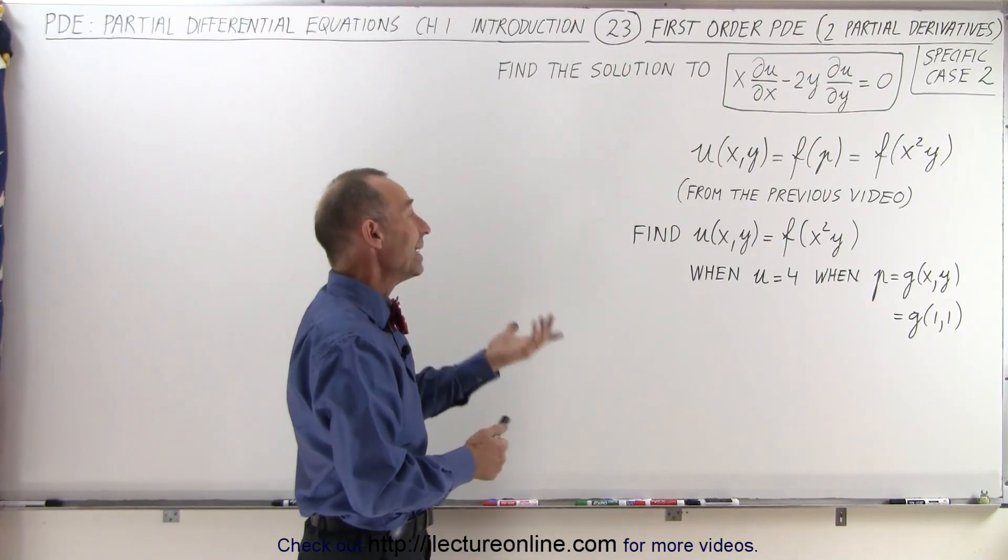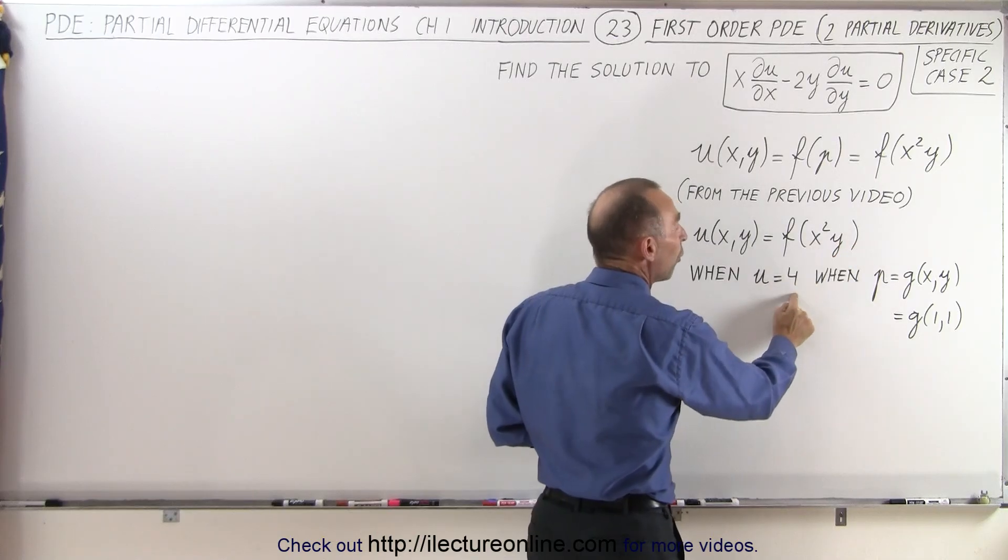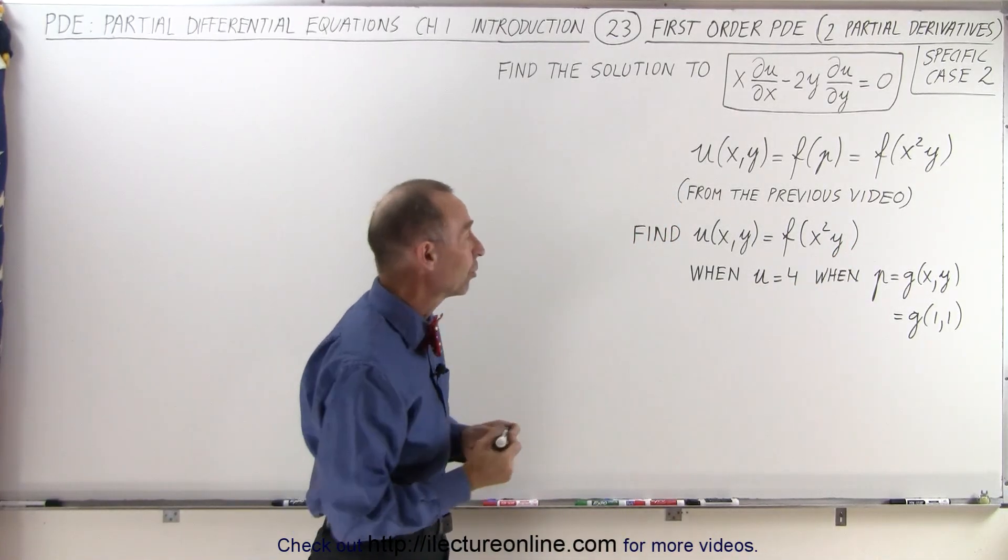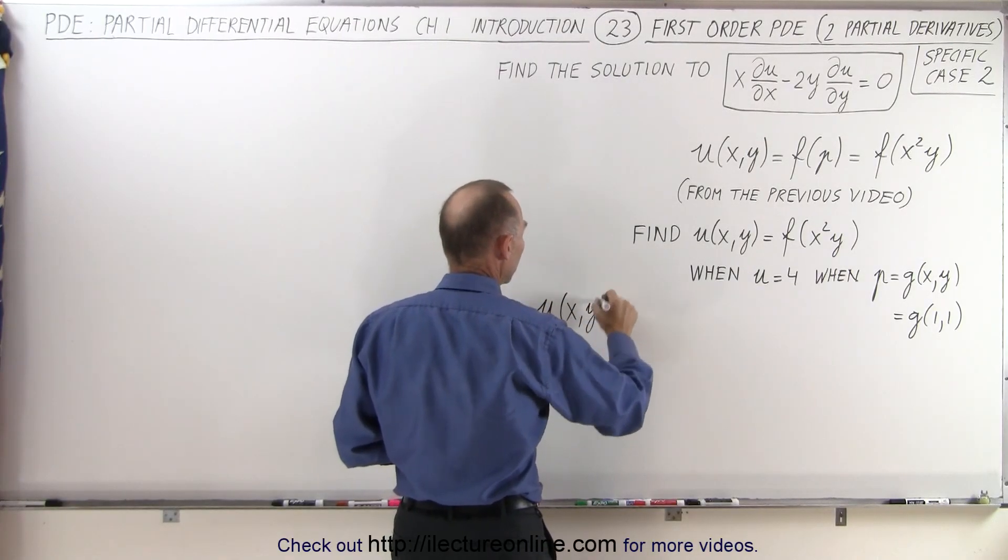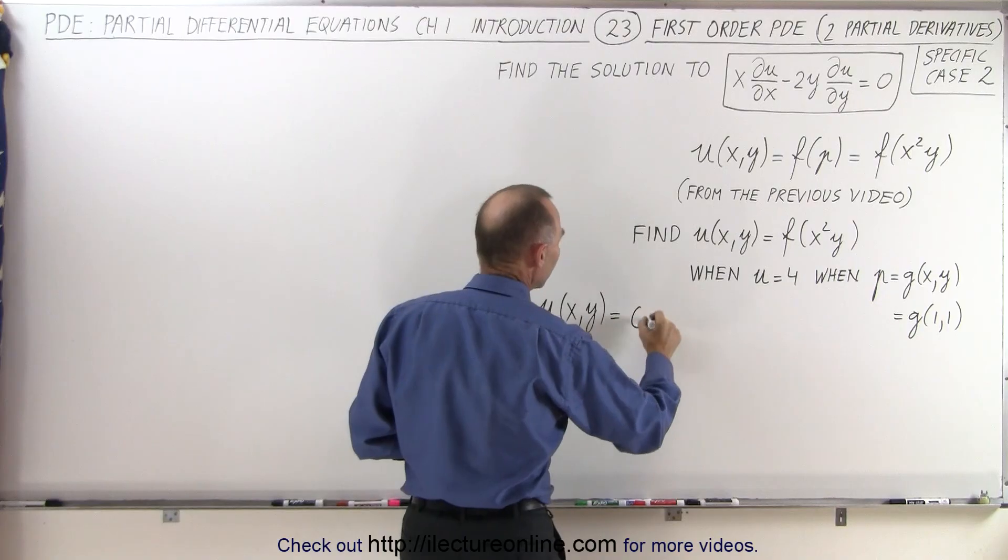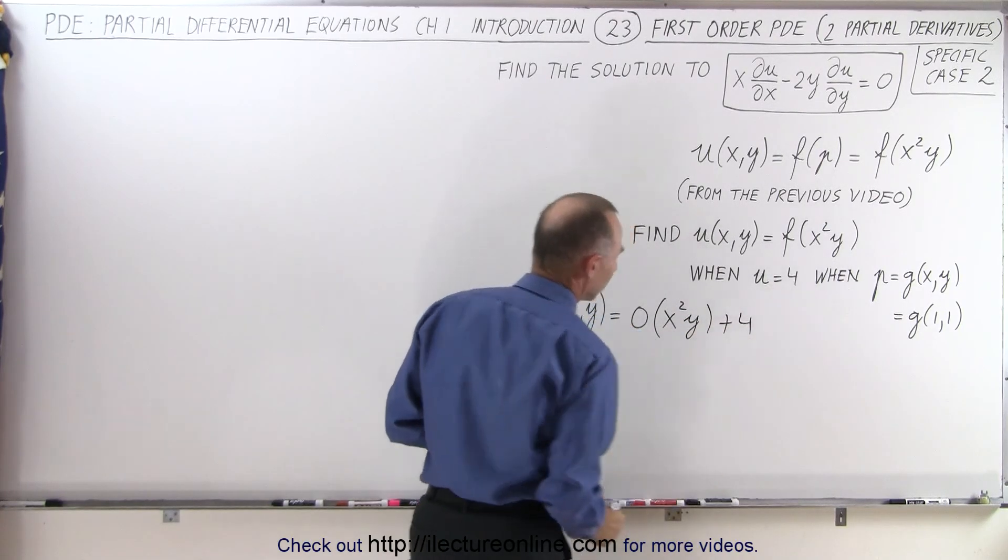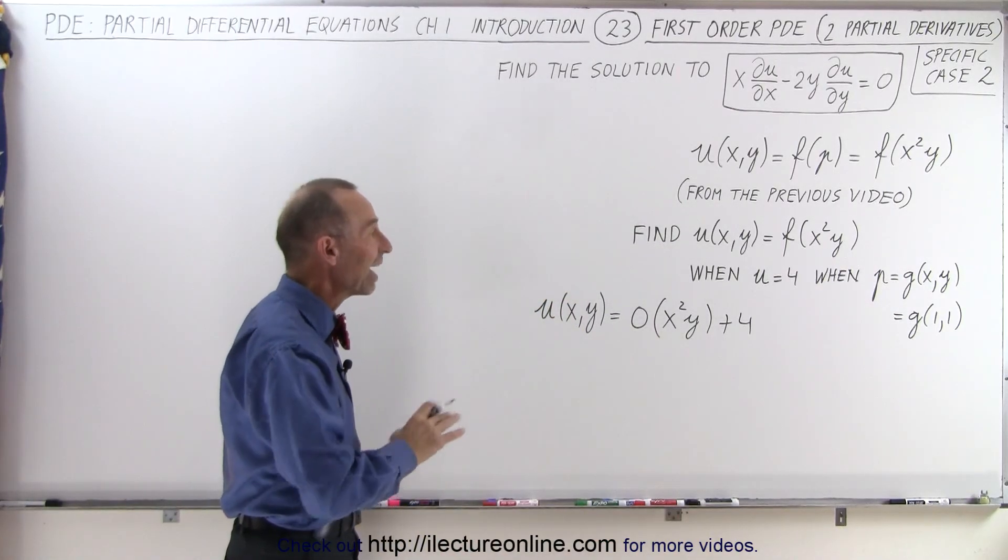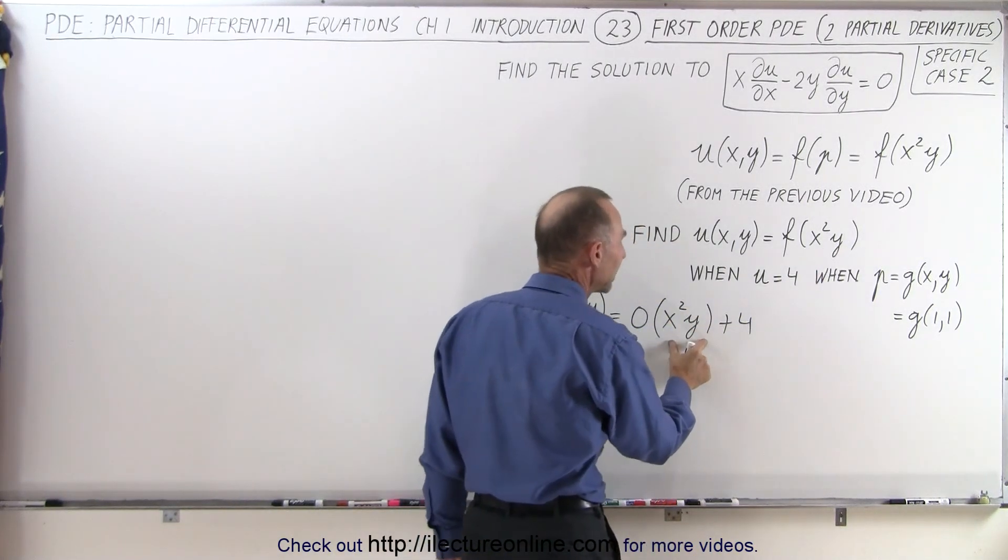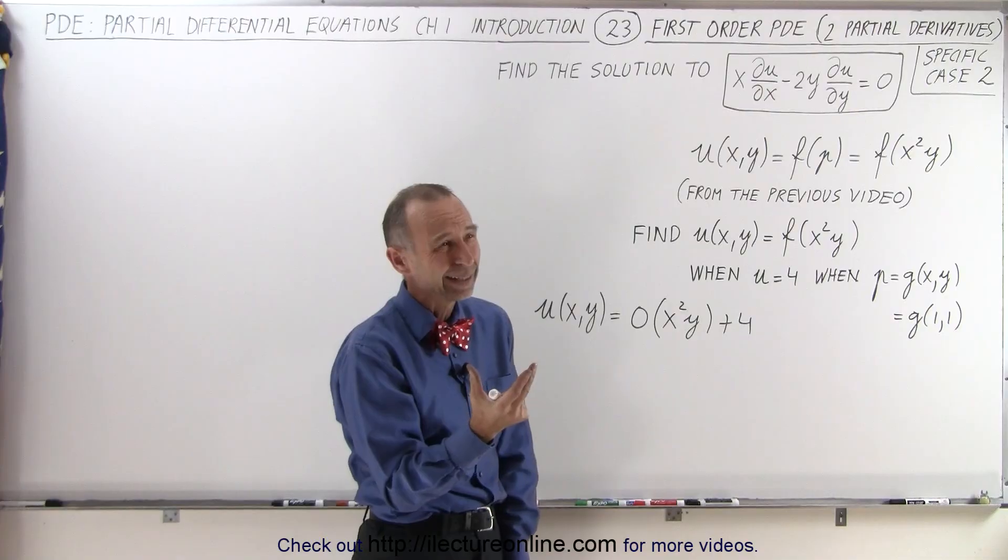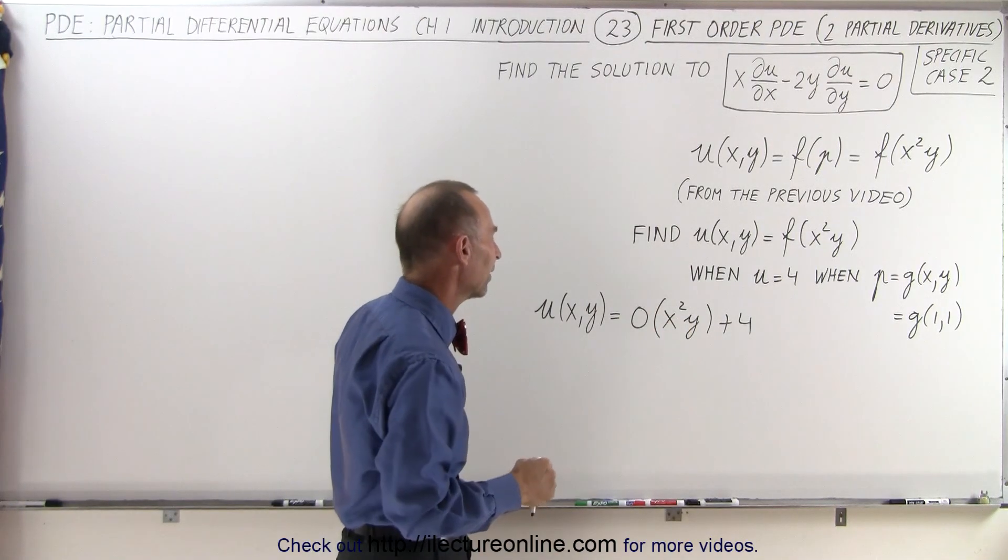Well let's see here. The easy thing would be to have something times this plus 4 and that something would actually be equal to 0. So one option would be to say that u of x and y would be equal to 0 times x squared y plus 4. Now technically that is not a valid solution because we wanted to have x square y in it. I don't know if that actually is a valid solution but it would at least give you the right answer.